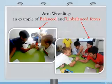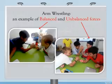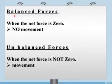In arm wrestling: when equal forces are applied, it is balanced. When one side has a bigger force and the other has a smaller force, they are unbalanced. In balanced forces, the net force is zero — so there is no movement. In unbalanced forces, the net force is not zero — that's why the object moves.